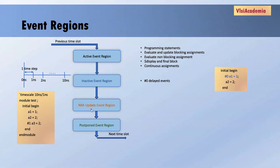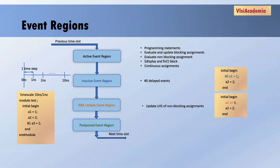The third region is the non-blocking assignment (NBA) update event region. This will not be processed until all inactive and active event regions are completely done. The update of the LHS of non-blocking assignments comes under this region. As mentioned, non-blocking assignments are divided into two steps: the RHS is evaluated first in the active event region, and then the LHS update happens in the NBA update event region. The things in black come under the active event region, and things in orange come under the NBA update region.